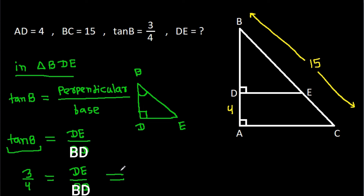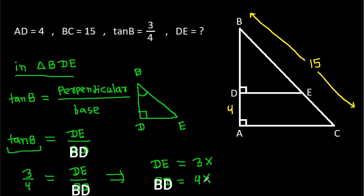That means, if DE is 3 times x, then AD it will be 4 times x. If DE is 3x, then BD it will be 4x.